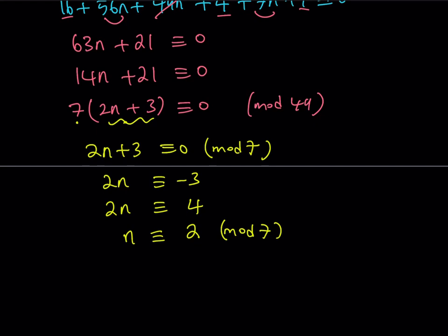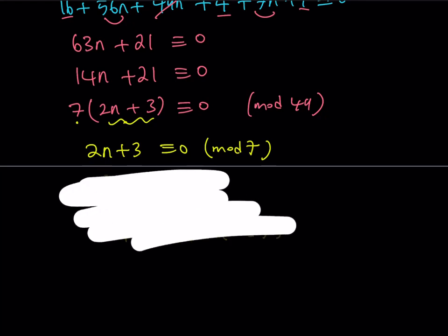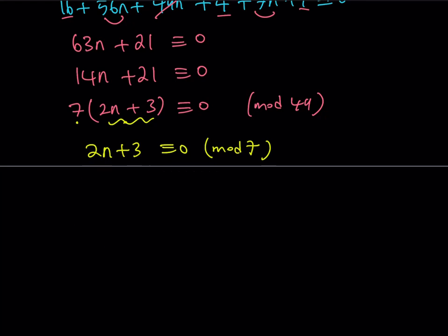Actually, I would probably write it as, okay, let's put it this way. I didn't mean to write it that way. So what I'm trying to say here is that, I'm trying to find the integer n value. So if 2n + 3 ≡ 0 (mod 7), that means that 2n + 3 is a multiple of 7. So let's say 7t.